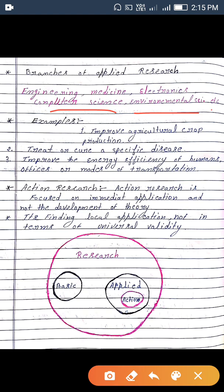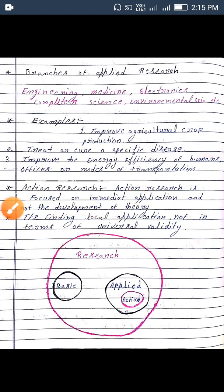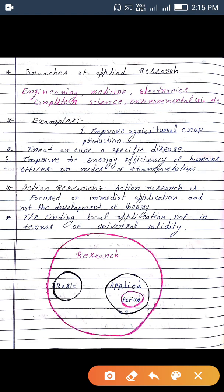Action research kya hota hai? Action research is focused on immediate application and not on the development of theory. It finds application locally — not in terms of universal validities. Its use is local application only.